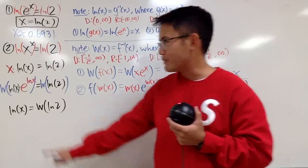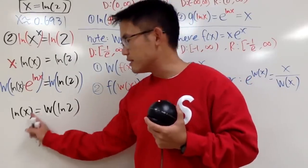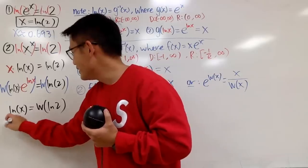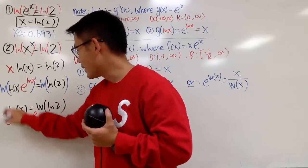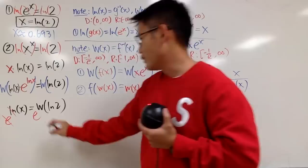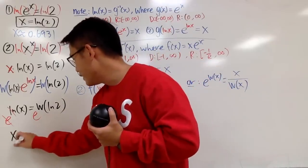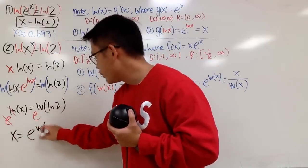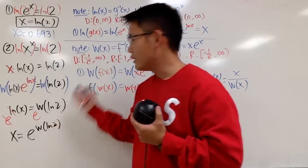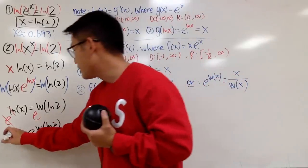One more step will be done, because we still have to solve for x. This x is inside of the ln. We just do e to this power, e to that power. Now, I can cancel this out. Anyway, you see, this is x equals to e to the w of ln 2 power, like that. And, this will be considered the answer to this equation in the exact form.